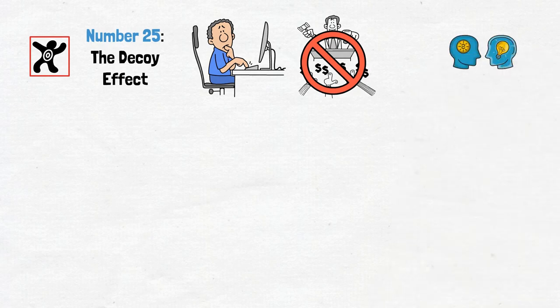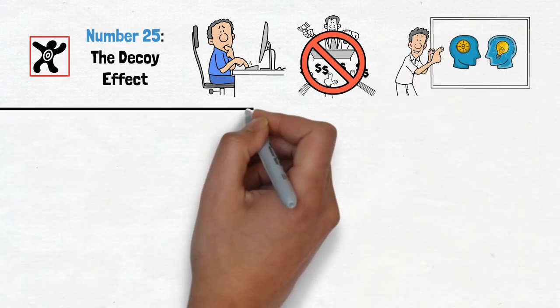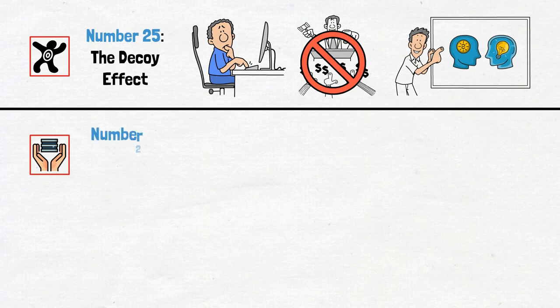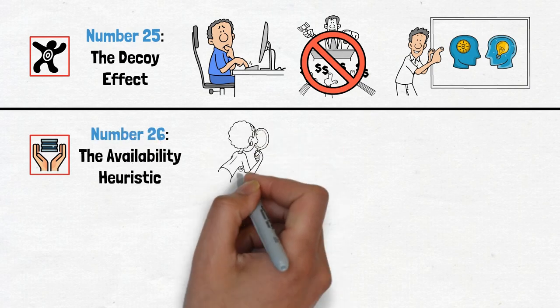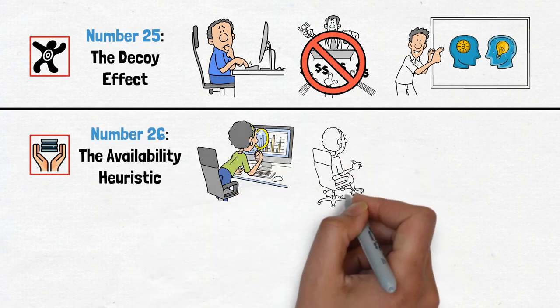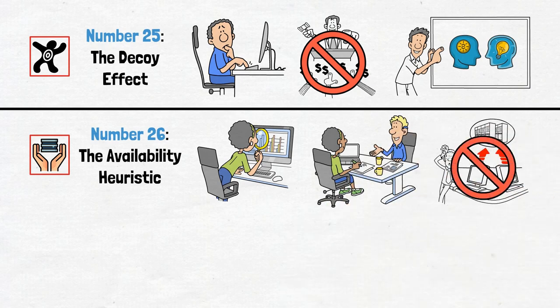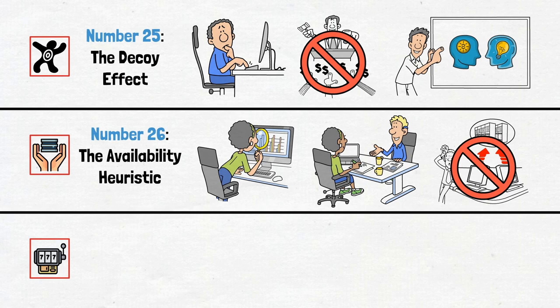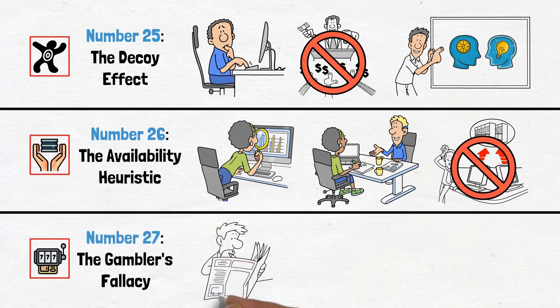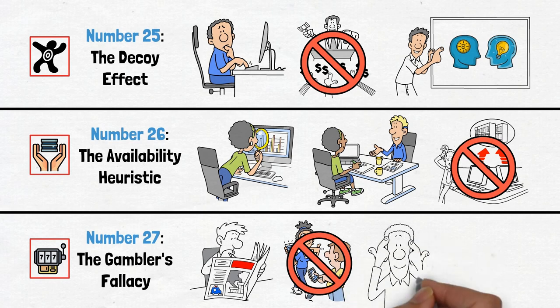Number 25, the decoy effect. Don't be fooled by decoys. Evaluate each option independently and choose what's truly best for you. Number 26, the availability heuristic. Seek out facts and statistics before making decisions. Don't let the availability heuristic lead you astray. Number 27, the gambler's fallacy. Each event is independent. Don't fall victim to false patterns and make decisions based on logic, not superstition.